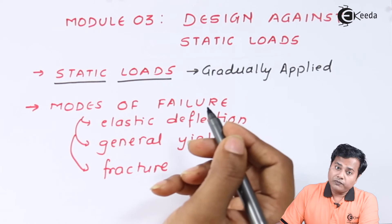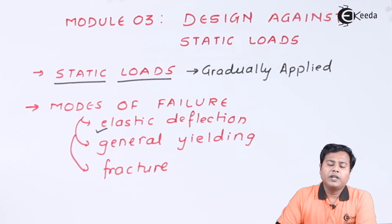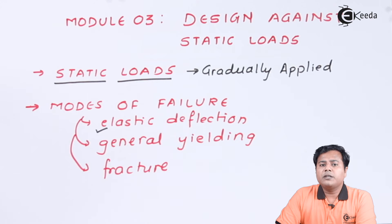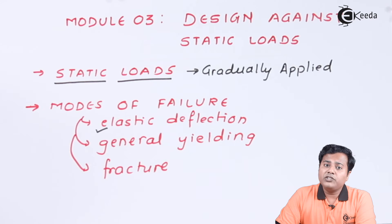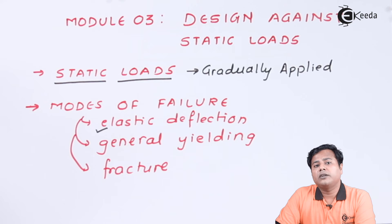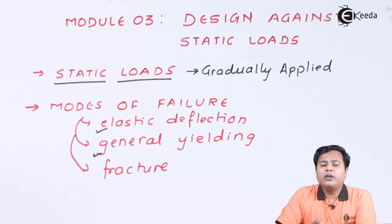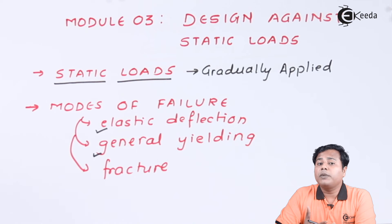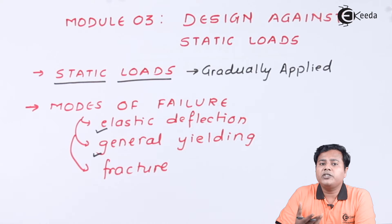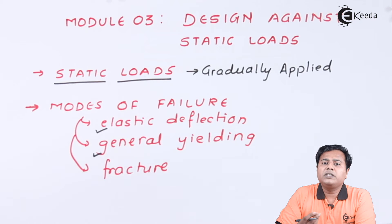There are basically three types of failure. The first is elastic deflection. Deflection may happen in different directions depending upon the applied load — if the load is applied in an axial manner, deflection takes place axially. The second is general yielding. When load is applied on a material, depending upon its elasticity or plasticity, it yields — meaning there is a change in dimension. If the yielding is beyond a specified tolerable limit, I'll say the product has failed.